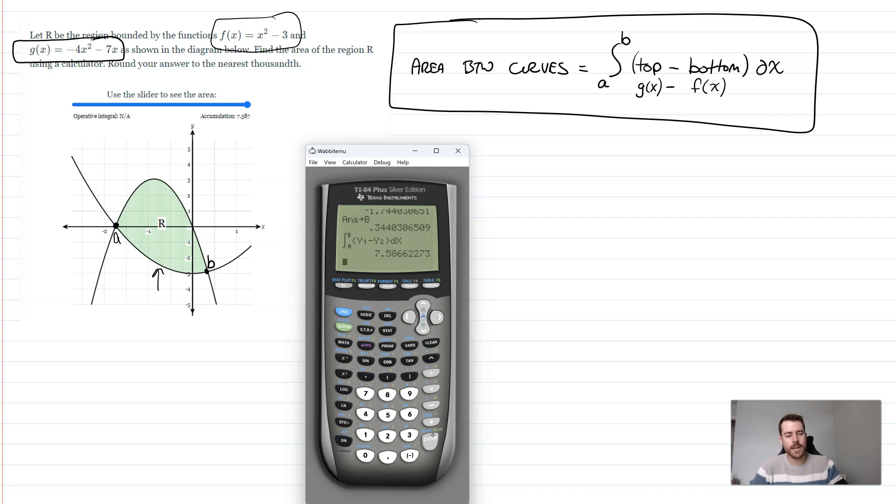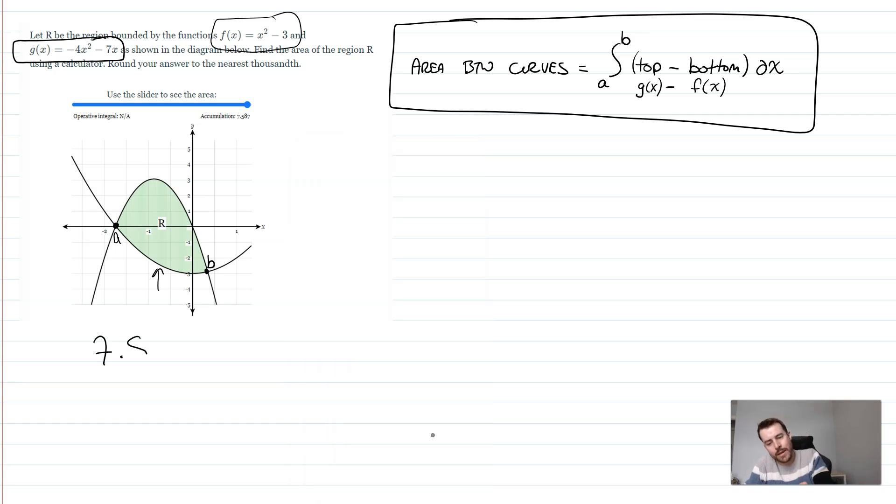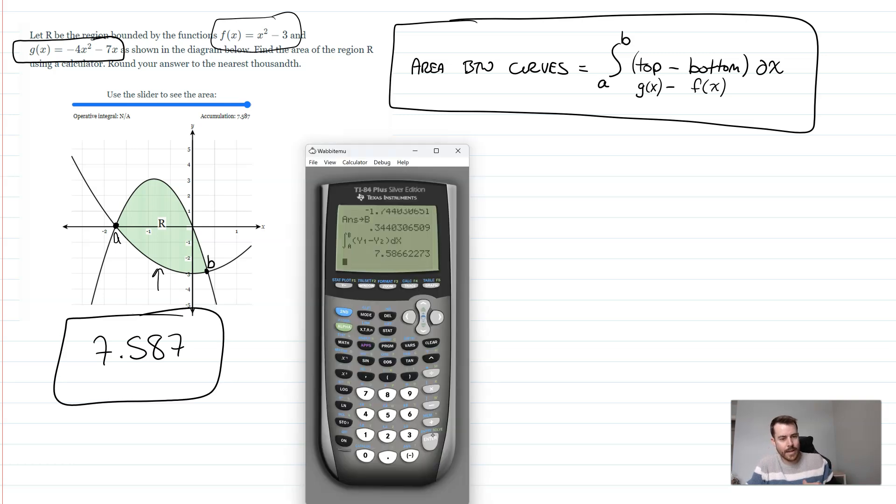And guess what, it gives you the answer, which is 7.587. When we round that to the nearest thousandths, 7.587. And you just did that all in your calculator there, and you're done.